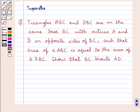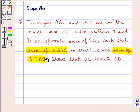Hello and welcome to the session. In this session we discuss the following question: Triangles ABC and DBC are on the same base BC with vertices A and D on opposite sides of BC, such that area of triangle ABC is equal to the area of triangle DBC. Show that BC bisects AD.